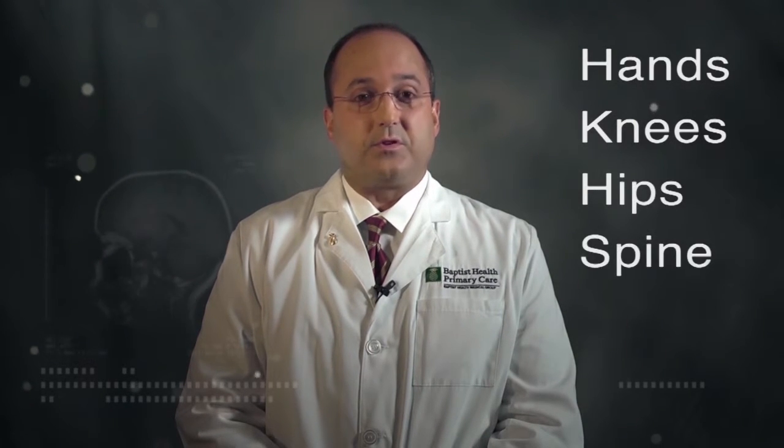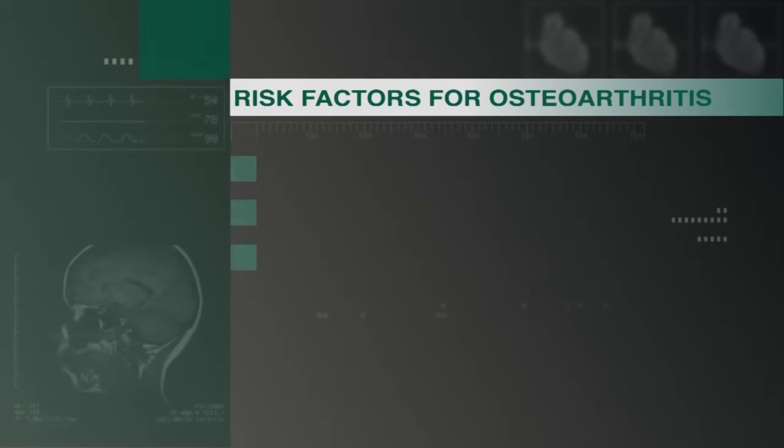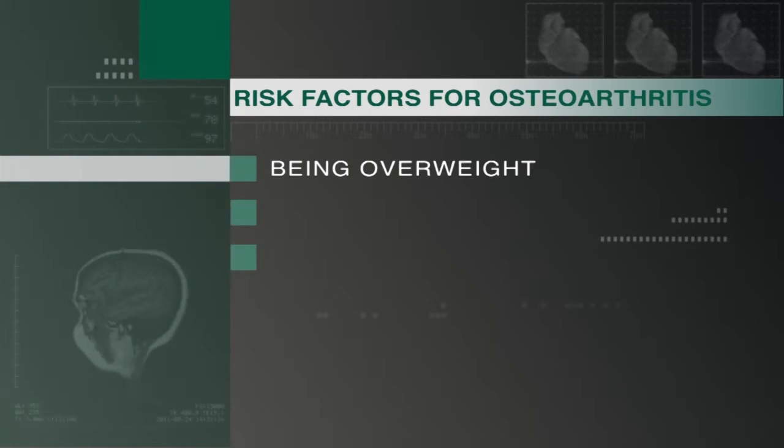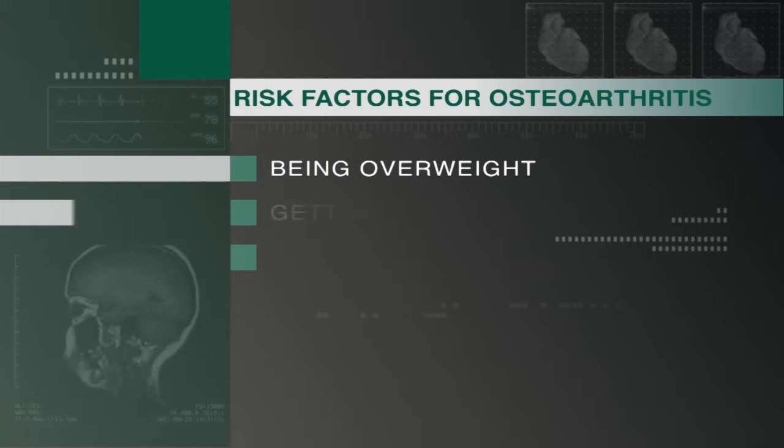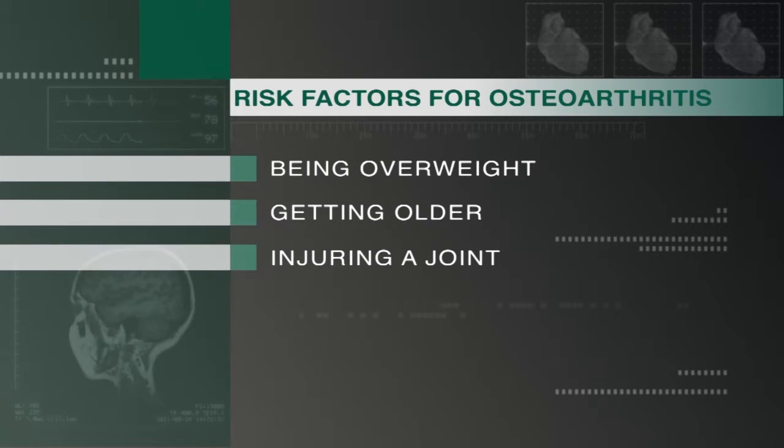It can occur in any joint, but usually it affects your hands, knees, hips, or spine. Risk factors for osteoarthritis include being overweight, getting older, or injuring a joint.